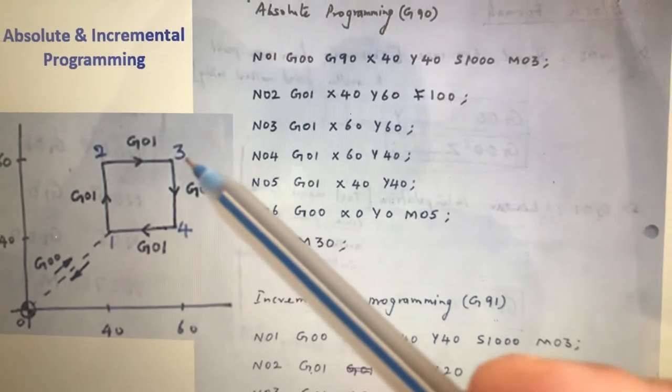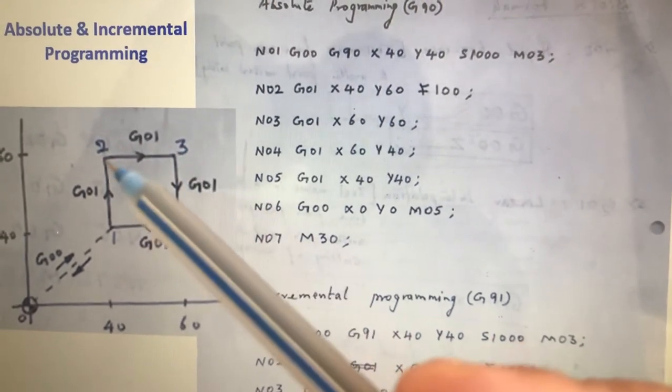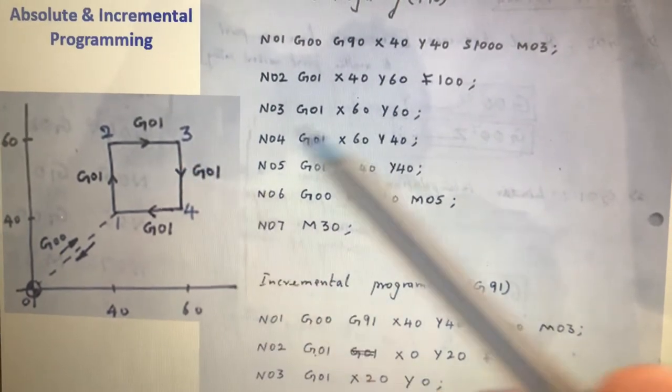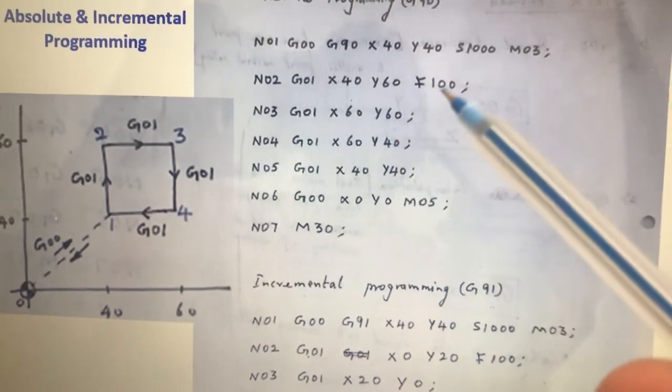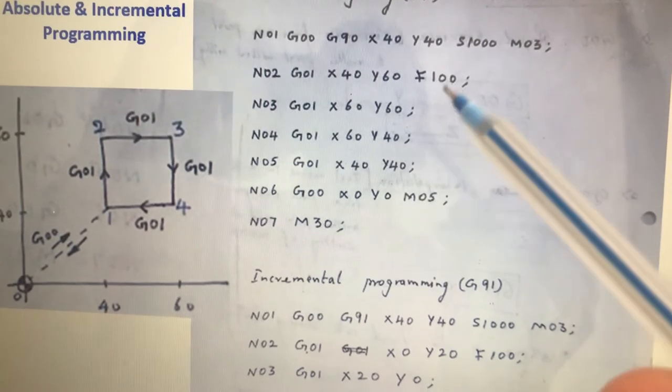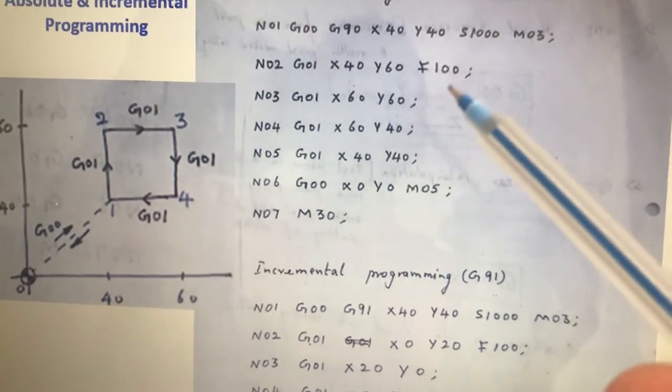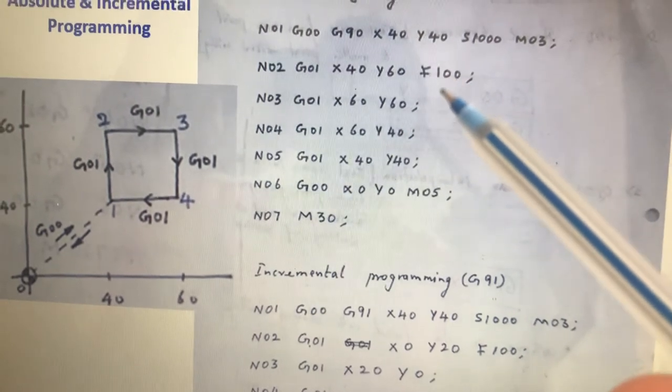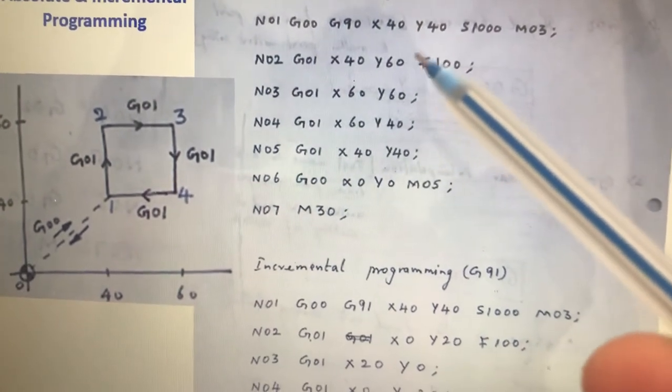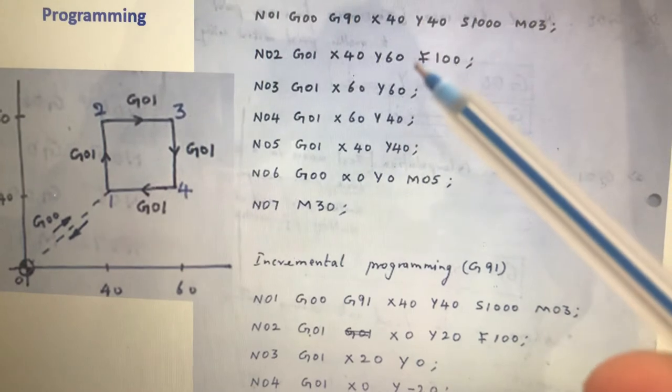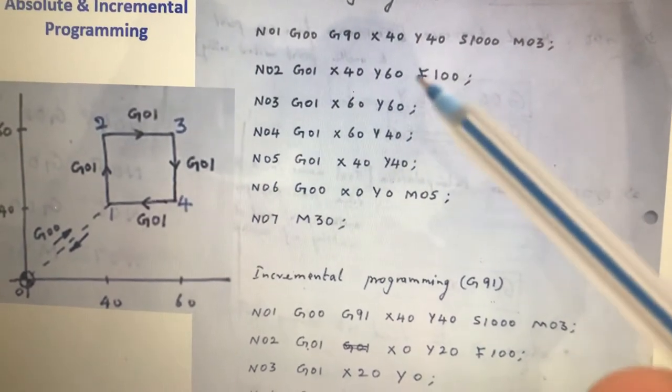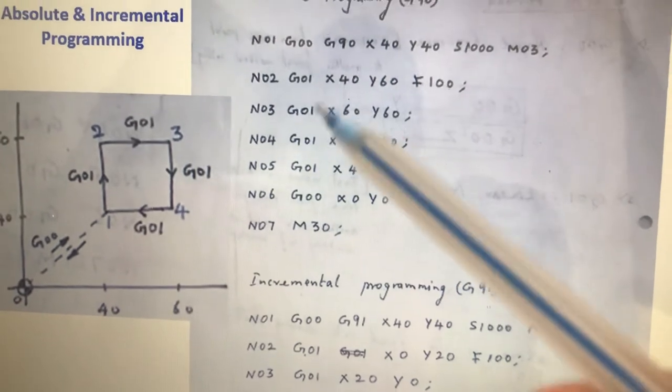Same thing repeats to the next point. If you come to point number three, again saying G01, what is the value here? X60, Y60. I have not written F100 because if you are not writing it, it repeats here. By default, this instruction is already given to machine. Machine's memory, it is there. Similarly, Z minus two which I forgot to write is also there in the machine.